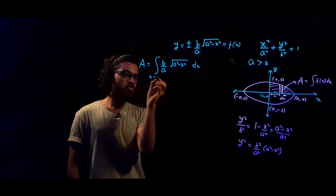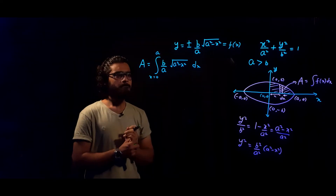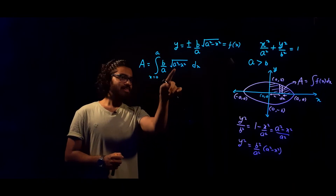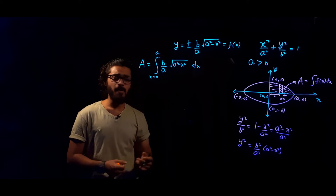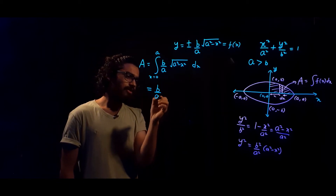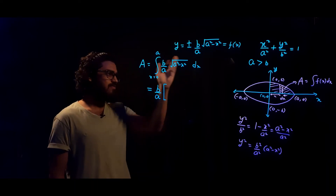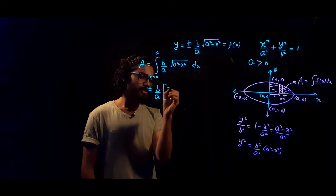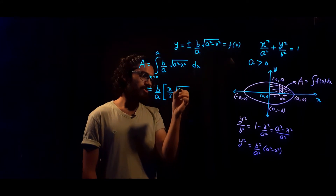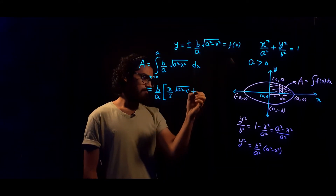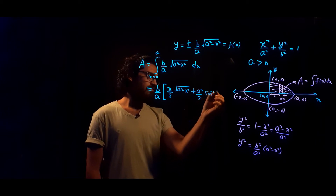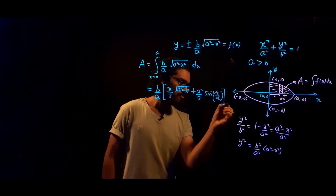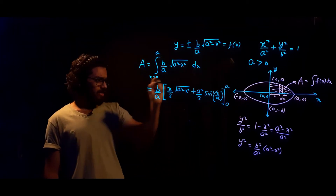Now we evaluate this integral. The term b/a is a constant, so we take it outside the integral. Using the standard formula, the integral of √(a² − x²) dx equals (x/2)√(a² − x²) + (a²/2)sin⁻¹(x/a), evaluated from 0 to a.